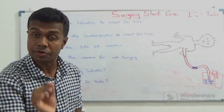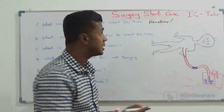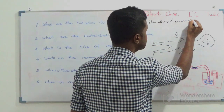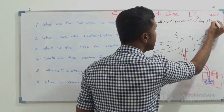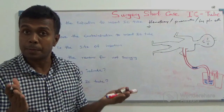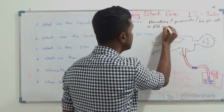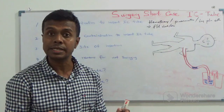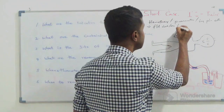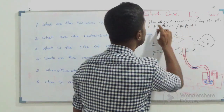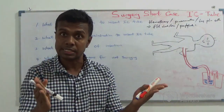The indications for IC tube insertion are: hemothorax, large pneumothorax, large pleural effusion, multiple rib fractures with flail chest when you are going to ventilate your patient, and prophylactically in trauma patients before transferring. Those are the indications for IC tube.